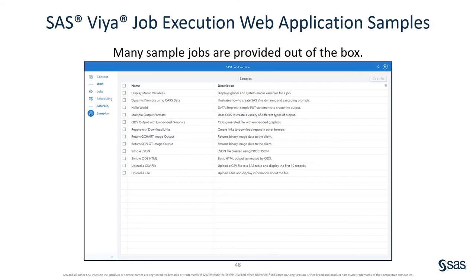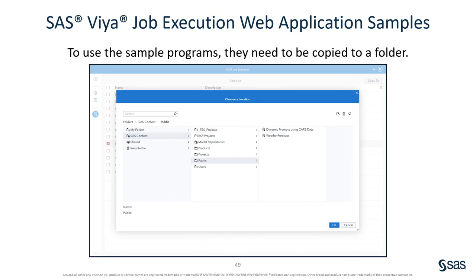Many samples are provided out of the box. This is a good starting point to learn how various actions are taken within the job execution application — everything from a simple hello world script to working with JSON script to uploading files. Although many samples are provided for you, the samples cannot be run directly from the samples menu page — they will need to be copied to one of the logical folders. To do this, simply select one or more samples you would like to copy and press the Copy To button. Once the copy is complete, you can navigate back to the jobs menu and navigate to the folders the samples were saved in, where the code can be reviewed and executed.